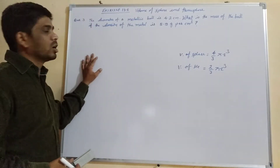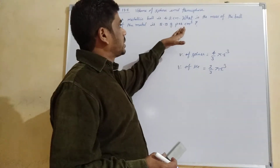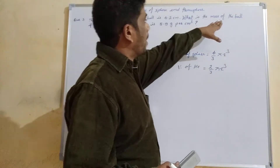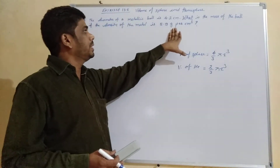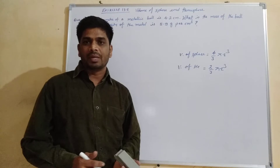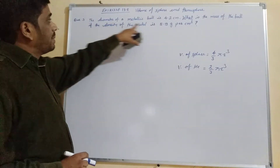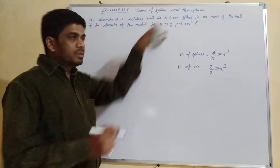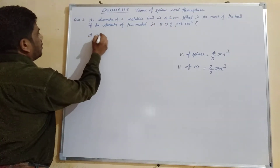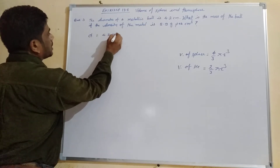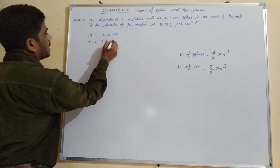Now let's see the third question. The diameter of a metallic ball is 4.2 centimeter. What is the mass of the ball if the density of the metal is 8.9 gram per cubic centimeter? So the diameter is 4.2 cm, which means the radius will be half — that is 2.1 centimeter.